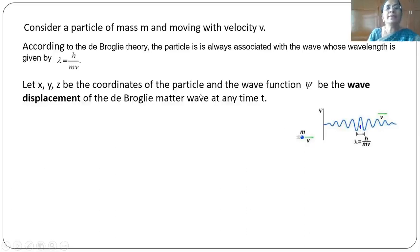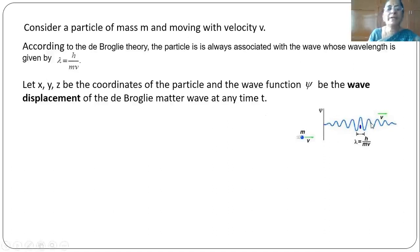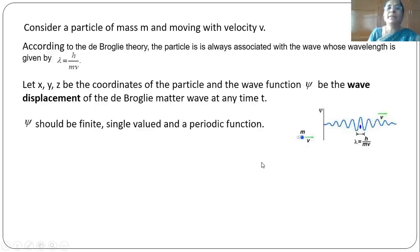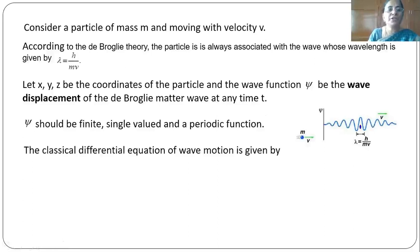Let xyz be the coordinates of the particle and the wave function psi be the amplitude or wave displacement of this de Broglie matter wave. So psi represents the amplitude or wave displacement of the matter wave. Psi should be finite, single valued, continuous and a periodic function.